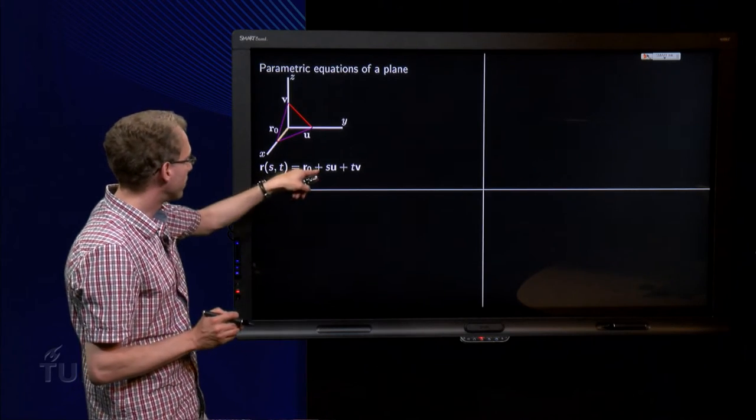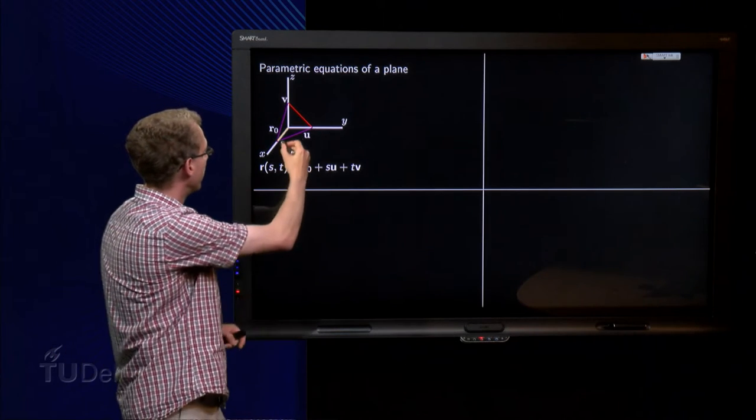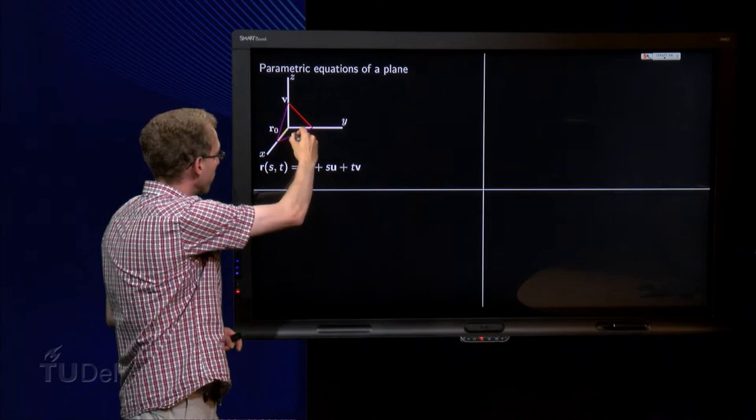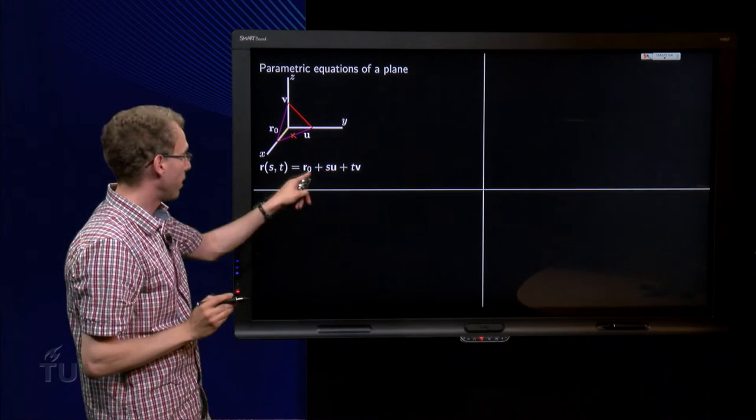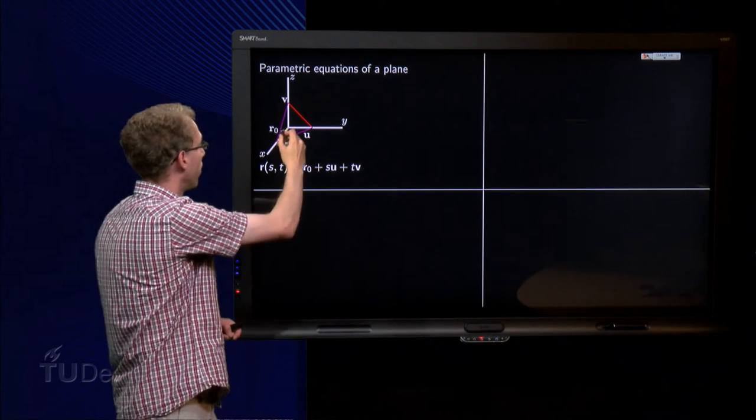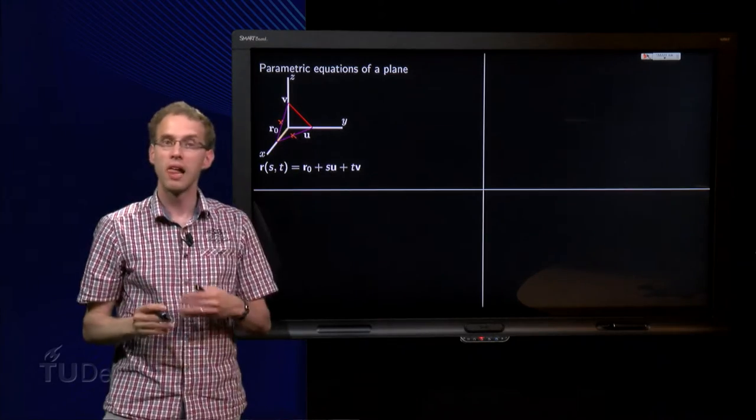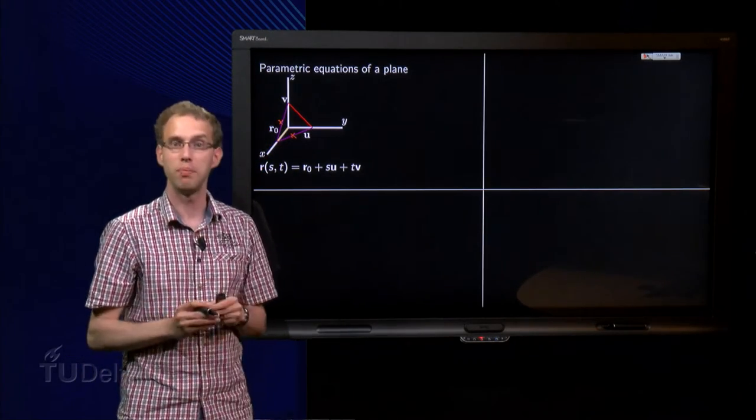So for example, if you take s one half and t equal to zero, you get R0 plus one half times u, then we get over here in the plane. And if we take for example s equals zero and t equals one half, we go R0 plus one half times v, so we get somewhere like here. And if you take the combinations you can get everywhere in the plane.